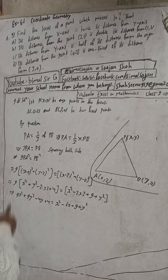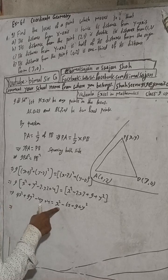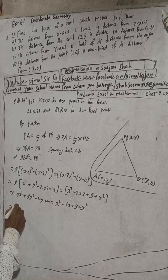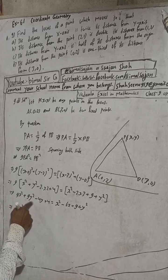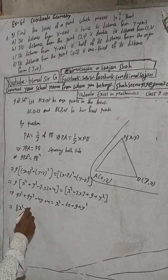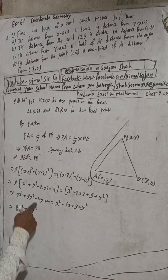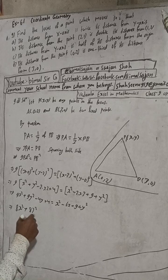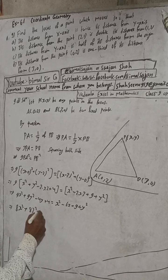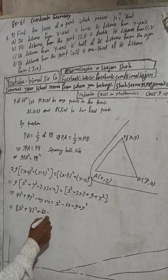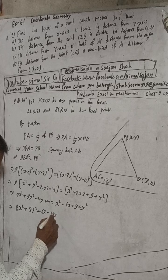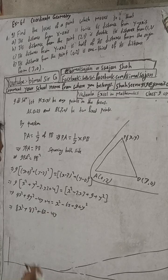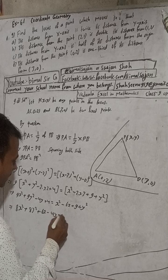Rearranging: 9x² minus x² is 8x², and 9y² minus y² is 8y². For the x-terms: plus 6x. For the y-terms: minus 36y. For the constants: 36 minus 9 is 27. But the teacher notices a mistake in the working and pauses to correct it.